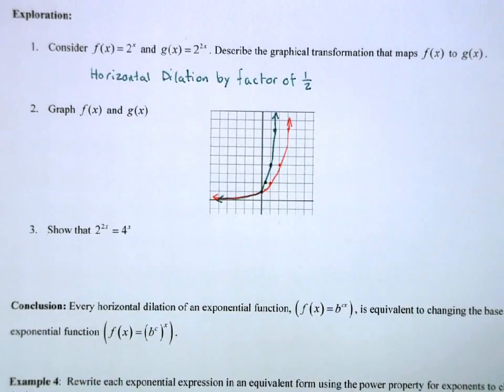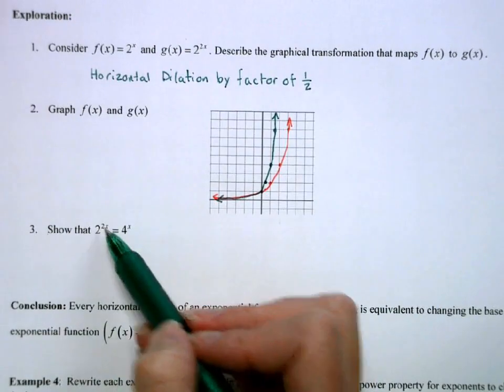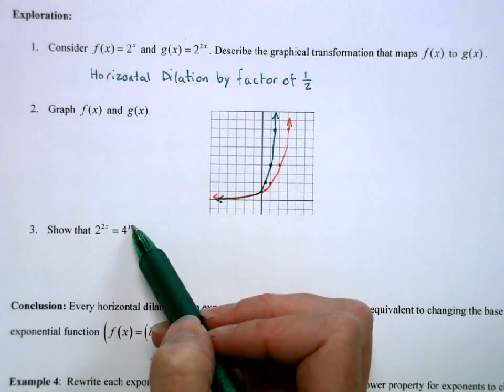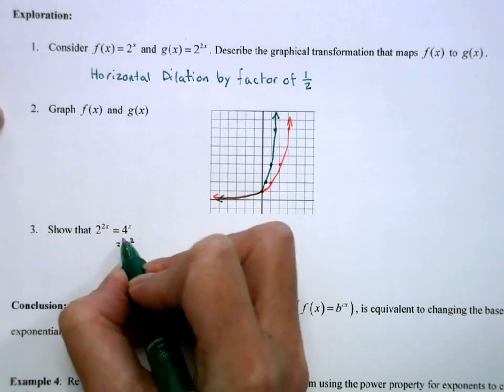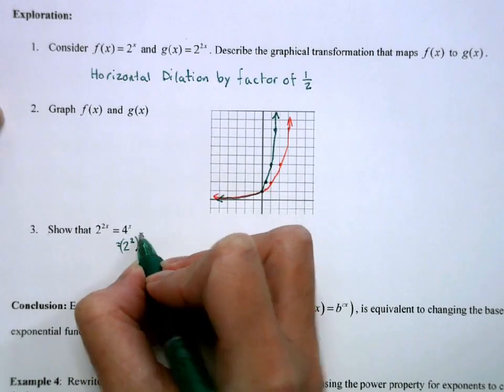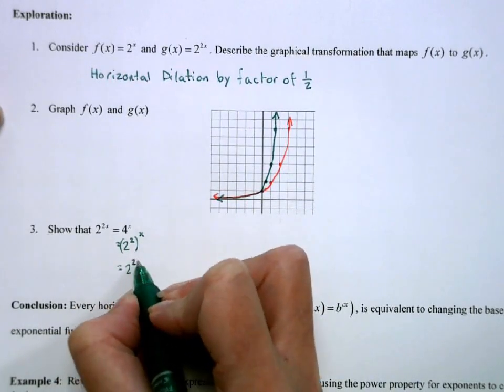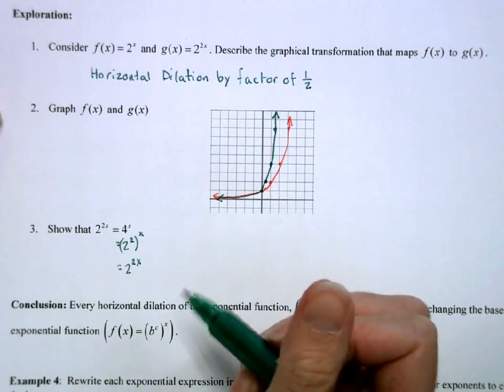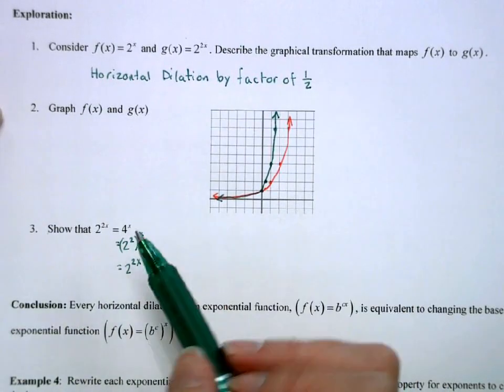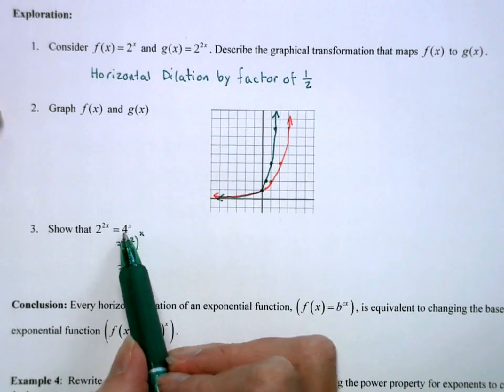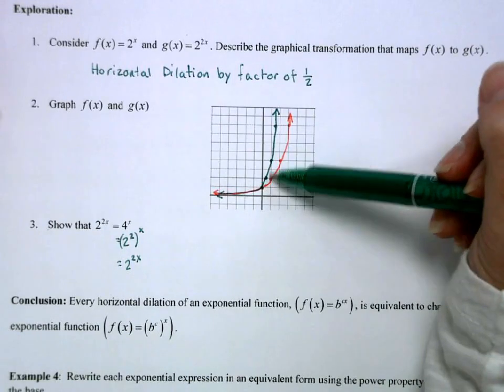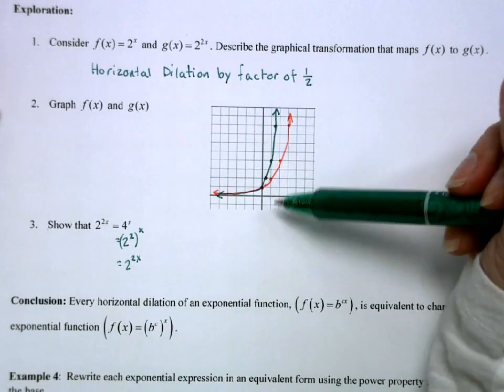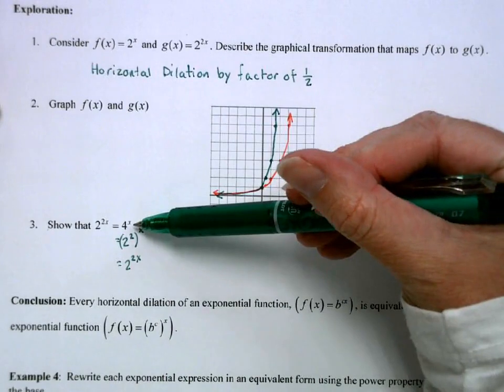But then we're going to look at the relationship between this using the power rule. So I've got 2 to the 2x, and I want to show that it equals 4 to the x. Well, I can rewrite this as 2 squared to the x, which is the same as 2 to the x. We had a horizontal dilation, and then all of a sudden now I've got 4 to the x. If I look at this graph, if I plug in 0, we get 1. If we plug in 1, we get 4. So this ends up being equivalent to a different base exponential function.